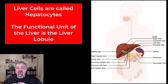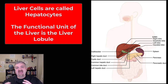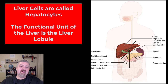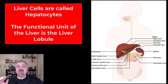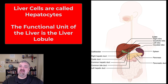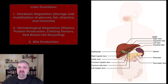The liver, because it's a solid organ, would also have reticular tissue — basically the packing peanuts that fill it in. Another very important term: the functional unit of the liver is called a liver lobule, and I'll show you one in just a moment. Remember that the functional unit of the liver is a liver lobule.